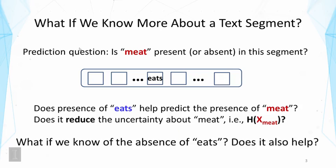Earlier, we talked about using entropy to capture how easy it is to predict the presence or absence of a word. Now we address a different scenario where we assume that we know something about the text segment. Suppose we know 'eats' occurred in the segment — how would that help us predict the presence or absence of a word like 'meat'? We want to know whether the presence of 'eats' has helped us predict the presence of 'meat'.